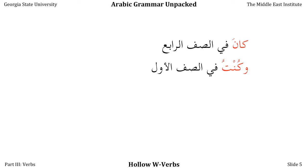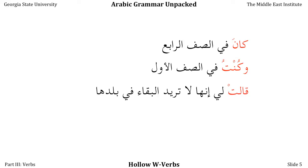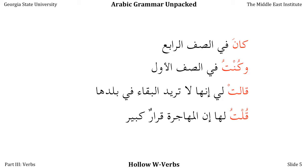Unlike regular verbs, these change stems in the past tense. The HE stem is KANA, and the ANA stem is KUN. The verb QALA, meaning 'to say,' behaves in exactly the same way. We can say: QALAT LI INNAHA LA TUREID AL BAQA FI BALADIHA — she said to me that she does not want to remain in her country. QULTU LAHA INNA AL MUHAJRA QARAUN KABEER — I said to her that emigration was a big decision.